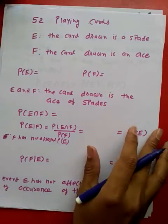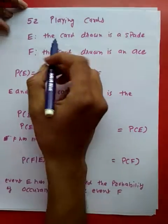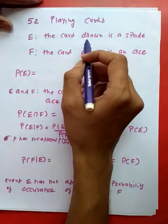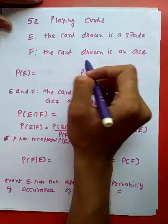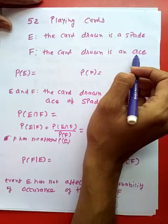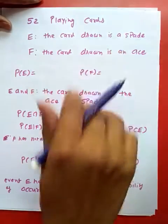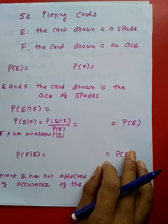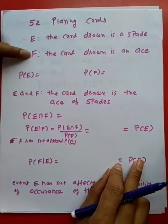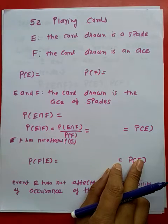Let us consider there are 52 playing cards. E is the probability that the card drawn is a spade, and F is the probability that the card drawn is an ace. What can we do when we draw a card that is a spade and an ace? That is what E and F are happening together, and yes, it is possible.